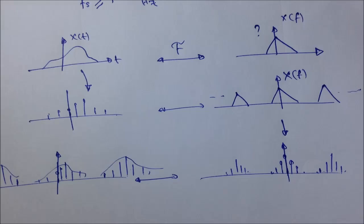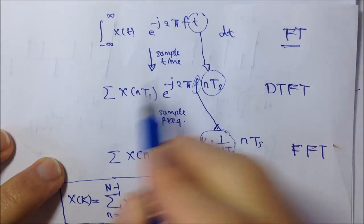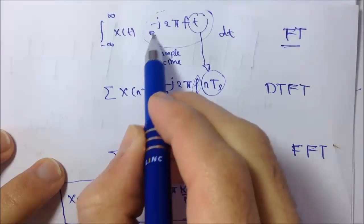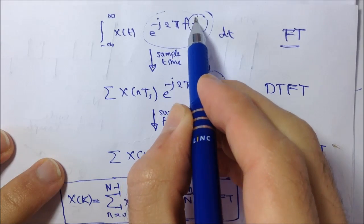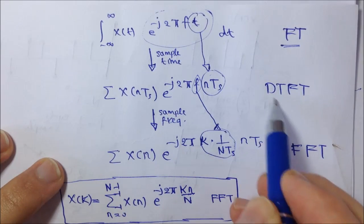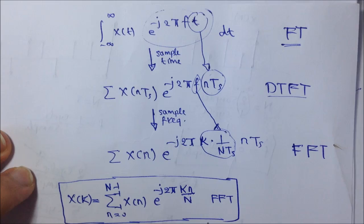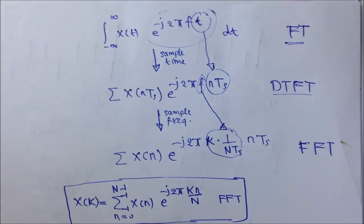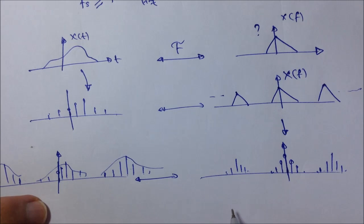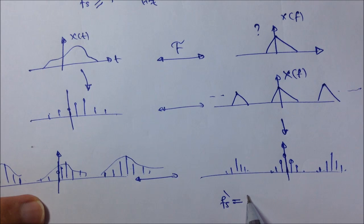Let's proceed with the FFT derivation. In the Fourier transform, look at the kernel: e to the minus j 2 pi Ft. We decided to sample the time, so t was replaced by n·Ts, and we got the DTFT. Now we are trying to sample the frequency to get the FFT. According to the modified sampling criterion, the minimum required fs prime equals the support of the signal, which is capital T.